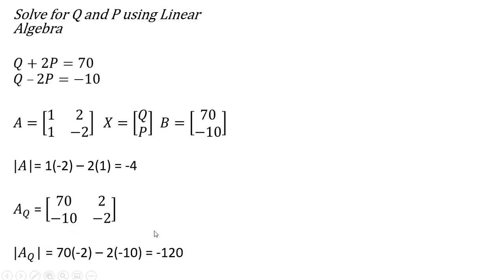And we get minus 120. So the variable q then, following our formula, is going to be minus 120 over minus 4, or 30.